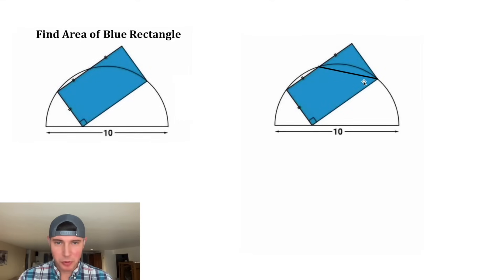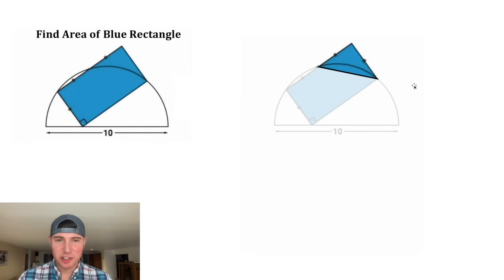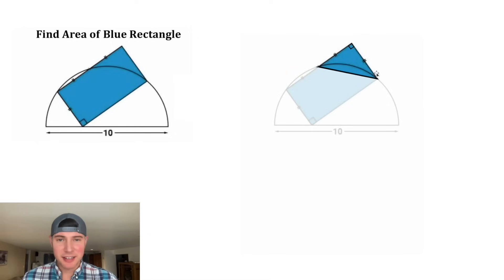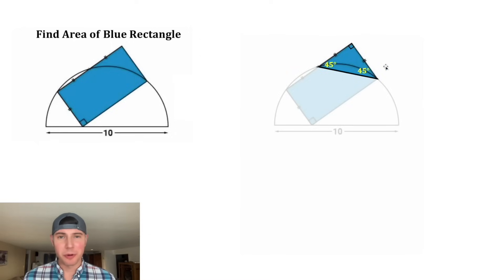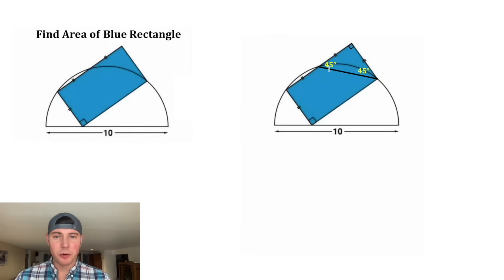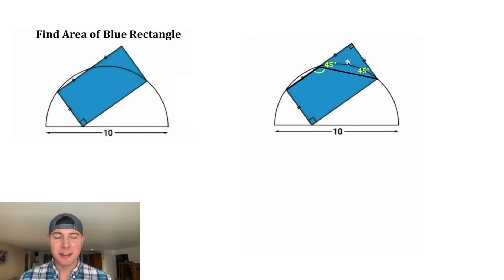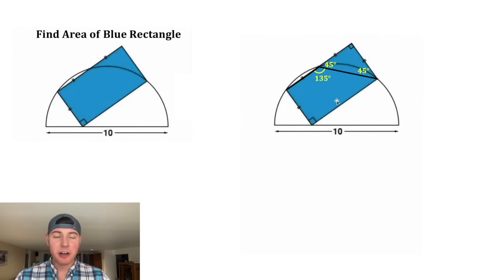First, let's connect this point to this point, and I want to focus on this triangle right here. First off, it's a right triangle because this is a rectangle, and second, it's isosceles because these two sides are congruent. That means it's a 45-45-90 triangle. And since this angle is 45°, we now know this angle — this plus this is a linear pair, which means they have to add to 180°, so this angle would be 135°.